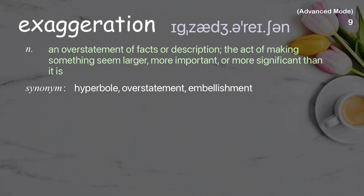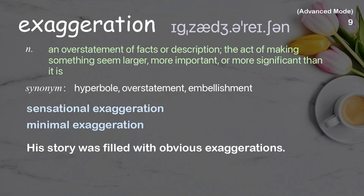Exaggeration: an overstatement of facts or description; the act of making something seem larger, more important, or more significant than it is. Examples: sensational exaggeration, minimal exaggeration. His story was filled with obvious exaggerations.